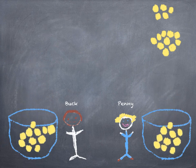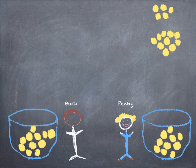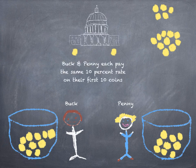Let's say the tax rate on income up to 10 coins is 10%. As you can see, Buck and Penny each pay the exact same amount — one coin — on their first 10 coins of income.